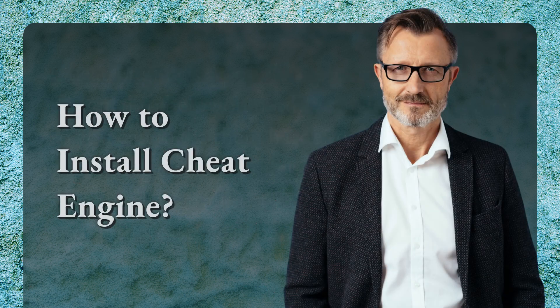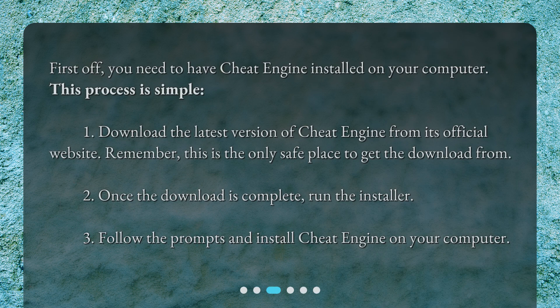How to install Cheat Engine? First off, you need to have Cheat Engine installed on your computer. This process is simple. 1. Download the latest version of Cheat Engine from its official website — remember, this is the only safe place to get the download from. 2. Once the download is complete, run the installer. 3. Follow the prompts and install Cheat Engine on your computer.